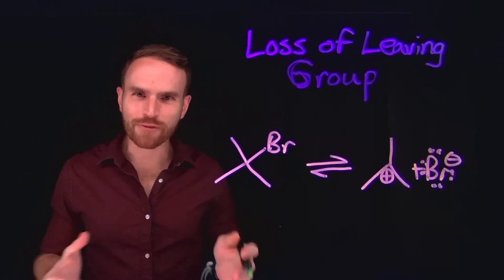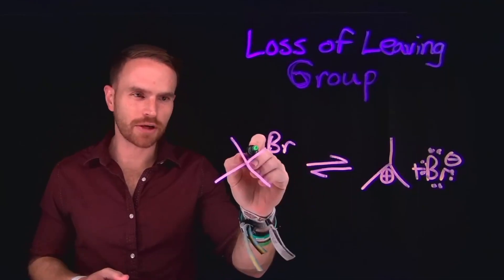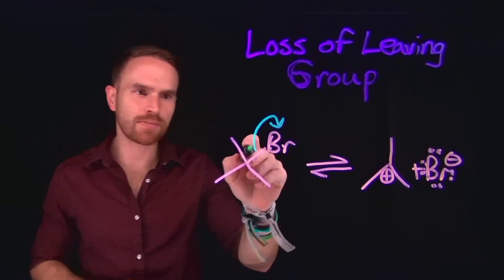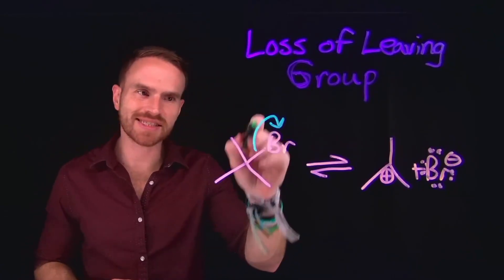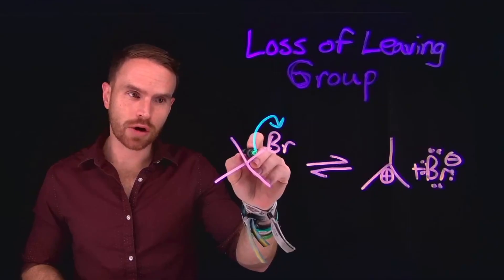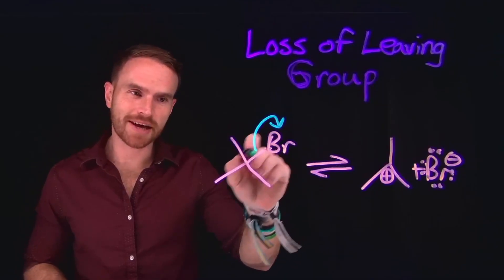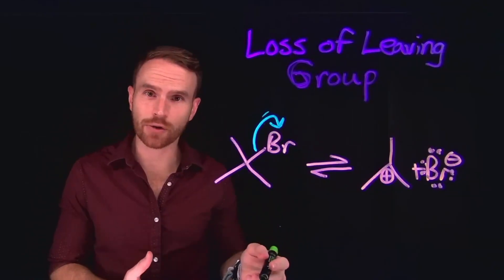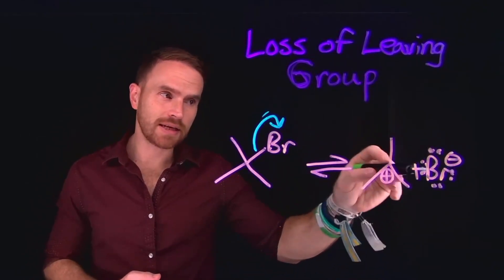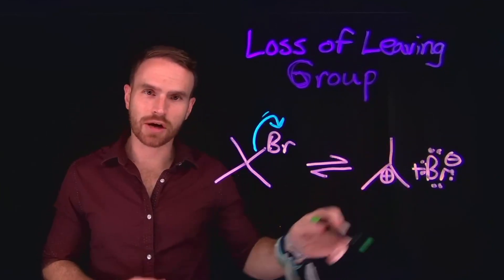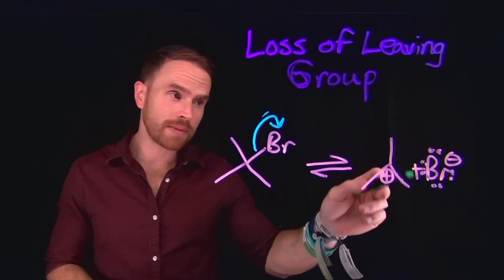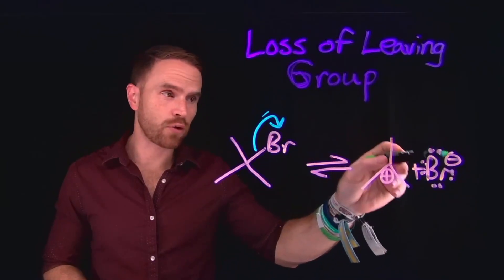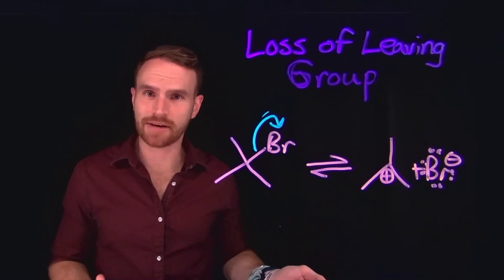The second pattern for electron pushing mechanisms is going to be the loss of a leaving group. A leaving group which is perfectly stable by itself is able to come off, and this involves just a single arrow. This arrow indicates that the electrons previously contained inside this covalent bond are now moving to be exclusively contained on that leaving group. So the bromide, as it leaves, now contains eight electrons and is going to be negatively charged. Bromine is a halogen which should contain seven valence electrons in its neutral state, so if it has eight, it has an extra electron giving it a negative charge.